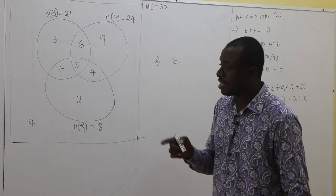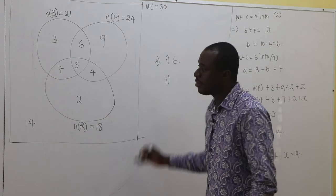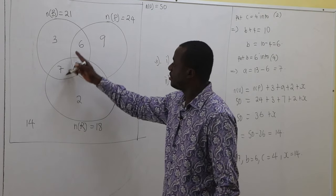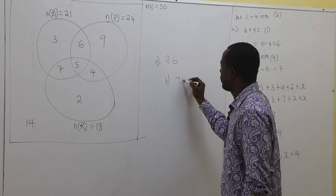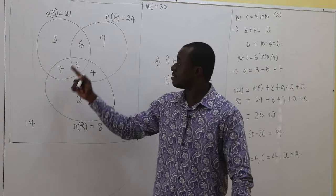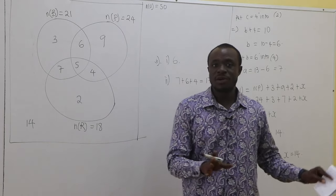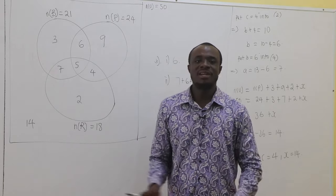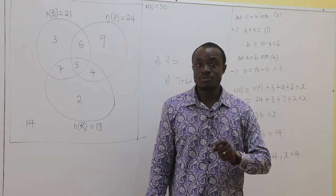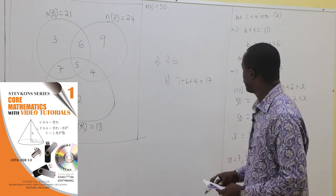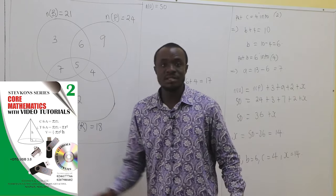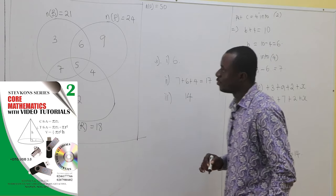The second question says exactly two kinds of food. That would be 7, 6, and 4. So that is 7 plus 6 plus 4, which equals 17. The third question says none of the three kinds of food — that is the complement, outside all the circles. And this is just equal to 14.